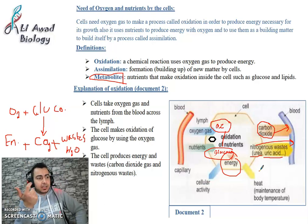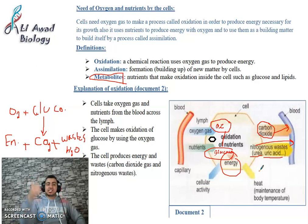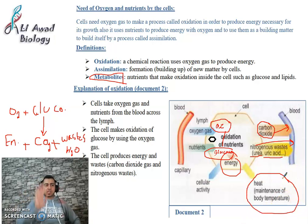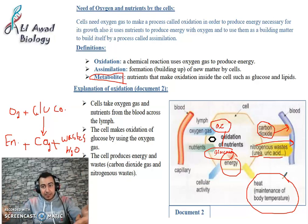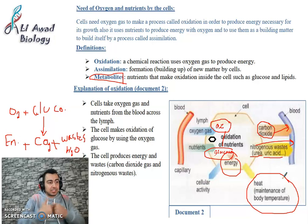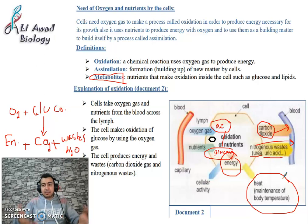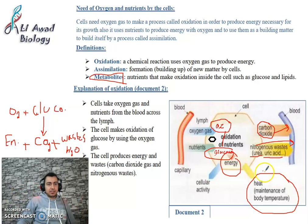So why does the cell need energy? The energy produced is needed for two purposes. The first purpose is as heat, to maintain the body temperature at 37 degrees Celsius. For example, if you go somewhere very cold, your cells must perform more oxidation to produce extra heat and maintain body temperature at 37°C — otherwise you would die. During illness, the immune system causes cells to work harder, producing high oxidation, high energy, and raising body temperature above 37°C.